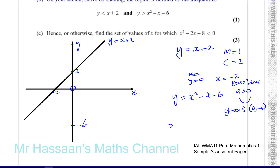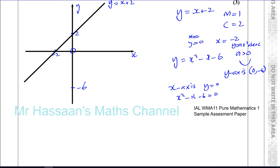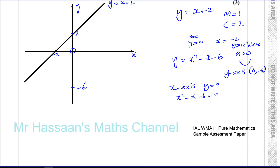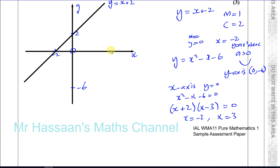It crosses the x-axis when y is equal to 0. When y equals 0, you have x squared minus x minus 6 equals 0. This factorizes straight away into two brackets: one has a plus, one has a minus. 3 times 2 is 6 and the difference is 1, so you get x plus 2 and x minus 3, giving x equals minus 2 and x equals positive 3.